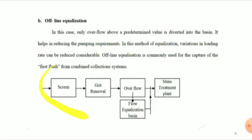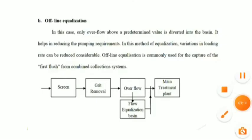In the offline method, the overflowing is handled via a grid connection. It connects to a different level, and the main treatment plant is distinct. The overflow is divided into the basin, where only a predetermined value enters the basin. This helps in reducing the pump requirement, and the pumping method is released accordingly.